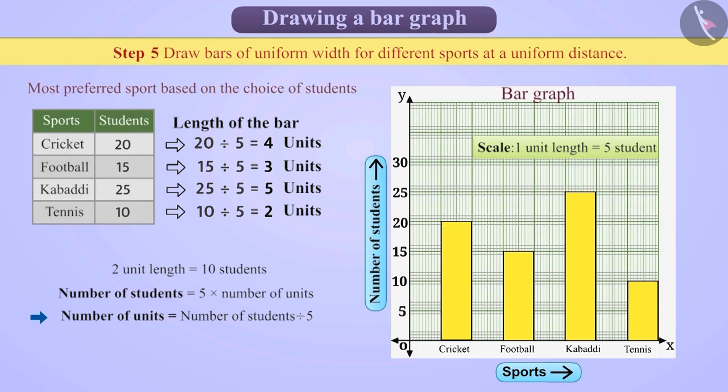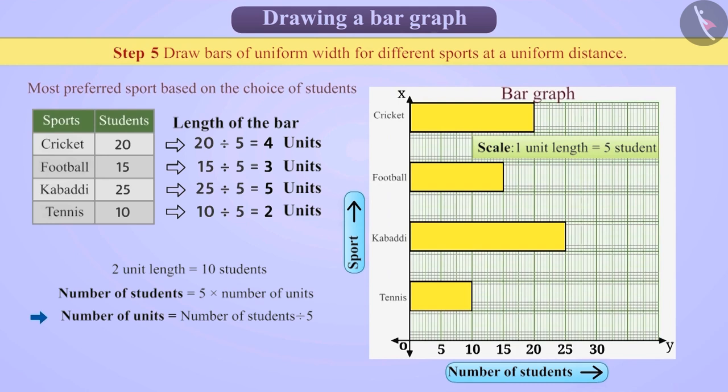Remember, it is not necessary that a bar graph has to be vertical. Same data can be represented by interchanging positions of games and number of students. We can also show the bar graph horizontally.